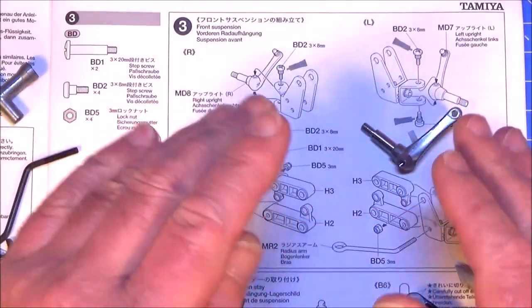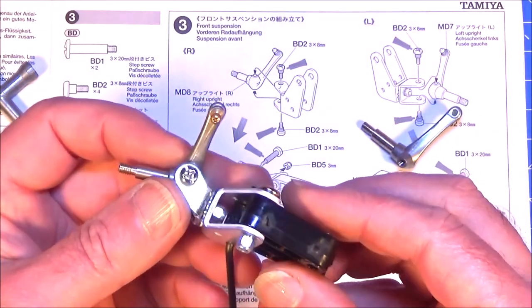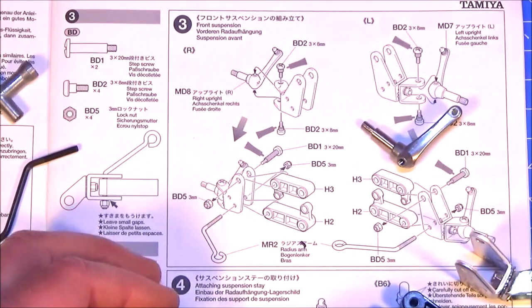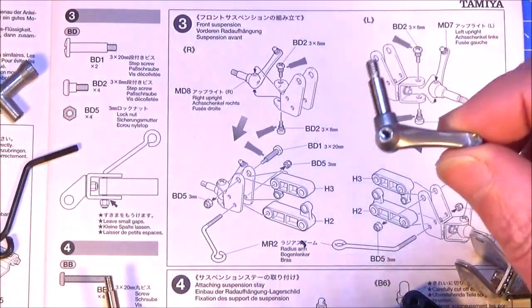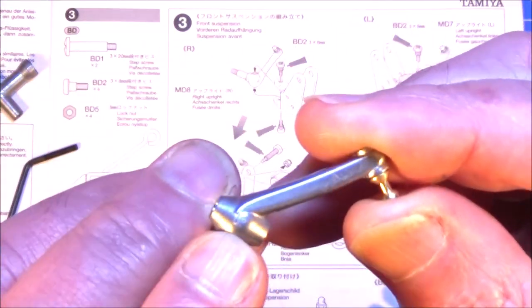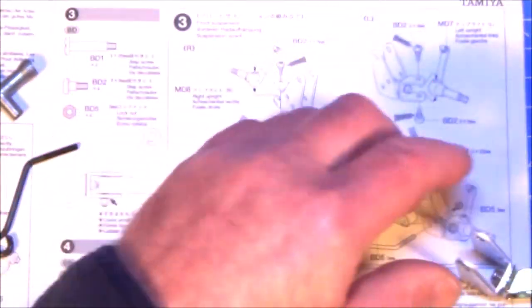Step 3 is the front suspension. Again there's a left and a right side obviously. I've already made up the right side and so basically you've got to do the same as this again but opposite if you see what I mean. If you look at the diagram you'll see what I mean. So you need your upright and it has got an L and an R printed on it. I don't know if you can see there but there's an L on this one, so that's how you know which is which.